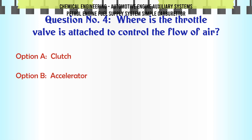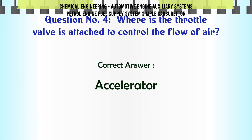Where is the throttle valve attached to control the flow of air? A. Clutch. B. Accelerator. C. Brake. D. Handbrake. The correct answer is Accelerator.